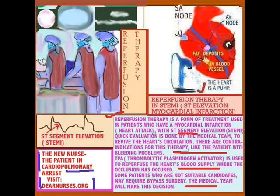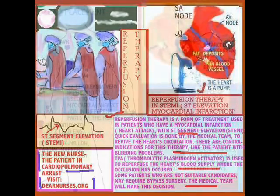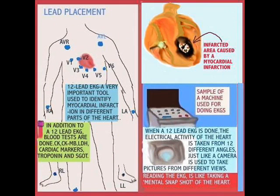Now let's talk about the 12-lead EKG, which is a very important tool. When a patient has a myocardial infarction, a 12-lead EKG is a must. There are other cardiac workups like lab values, including cardiac markers: CK, CPK, LDH, troponin, and SGH. There may be more tests depending on what the doctor feels is necessary, but the EKG is usually the best indicator of the location of the myocardial infarction.